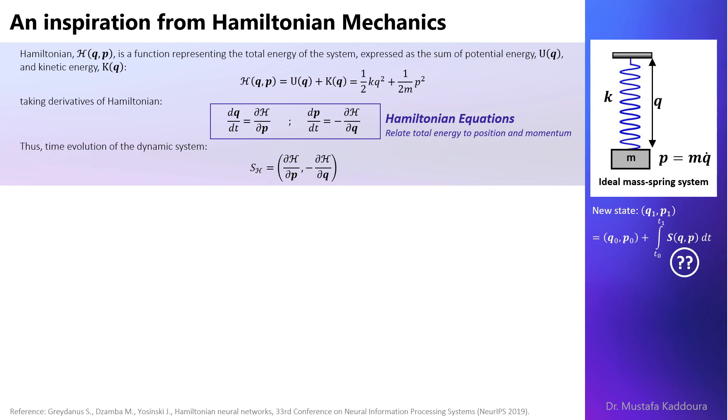What differentiates the Hamiltonian neural network is that it aims to learn the Hamiltonian h instead of s which gives the model the ability to learn exact conserved quantities from the data.